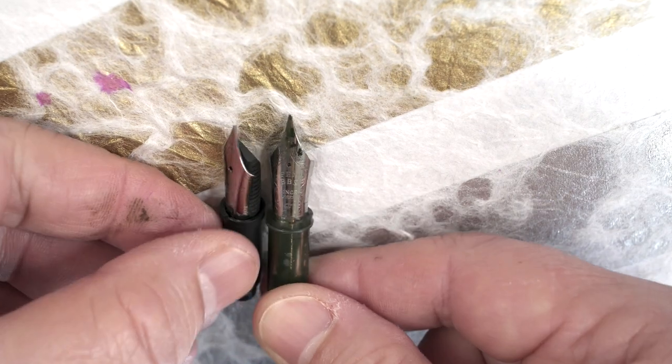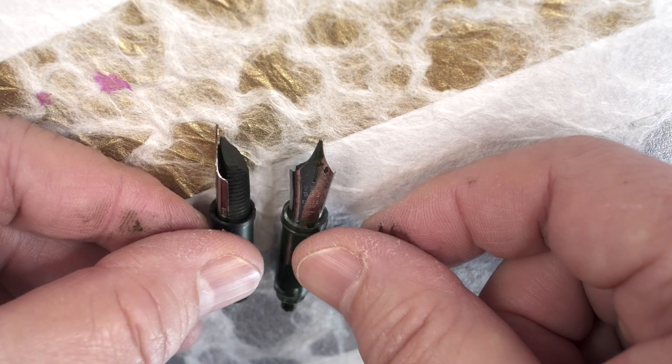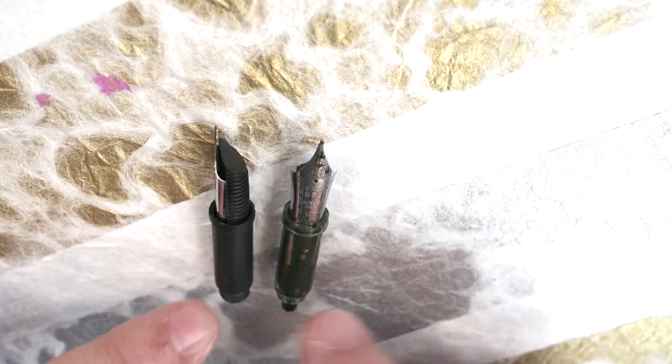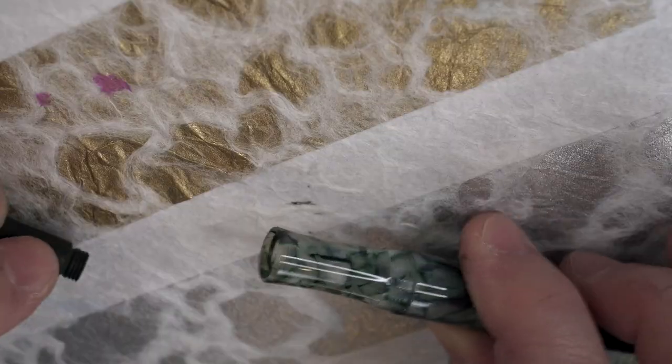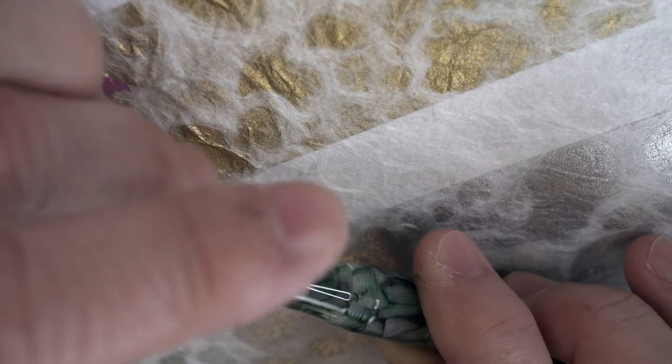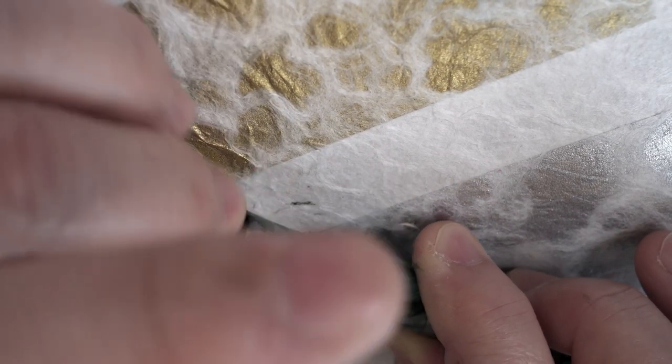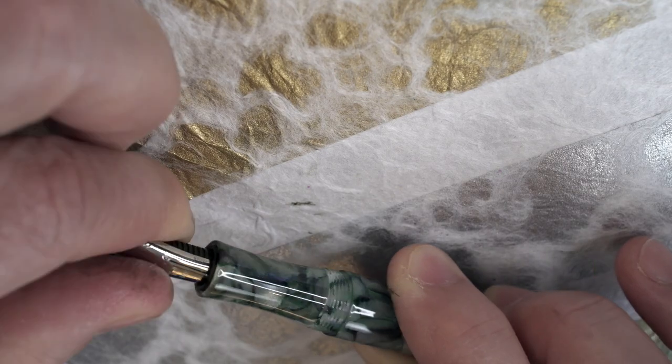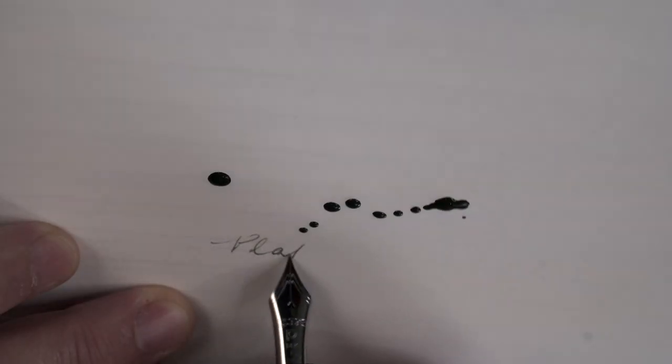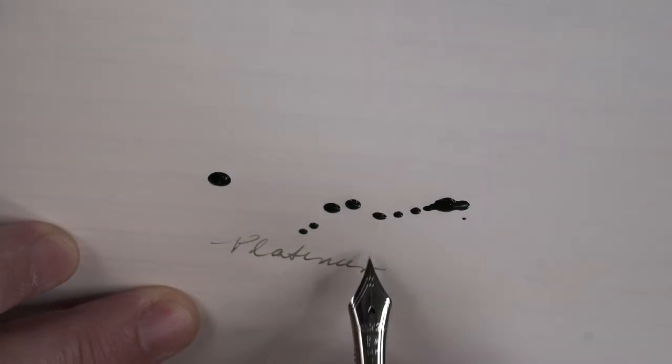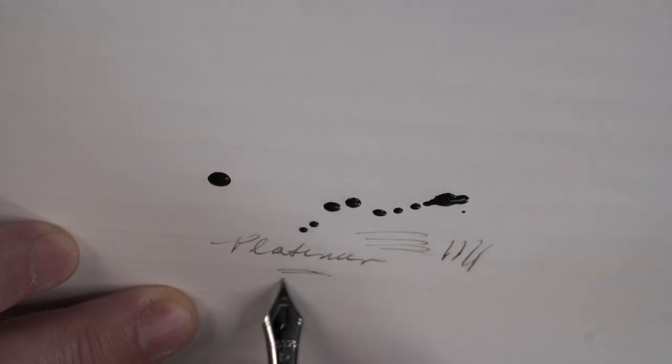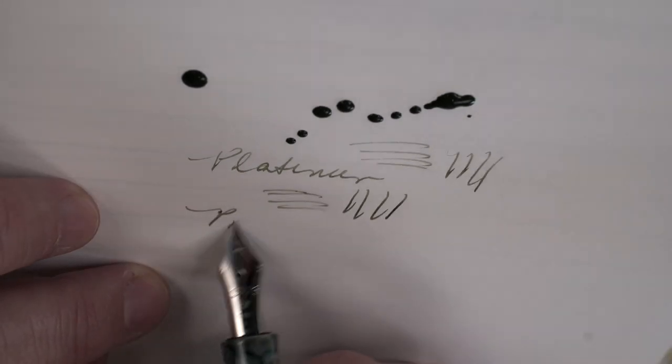The problem with, like, say a number six Jowo nib is that it's a little bit too long, and I had one stuck in there for a little while and I pried it back out. And then I'll screw the FNF nib unit back into the pen. And it works great. Compared to the Pen BBS fine nib, it is a lot finer and has a little more feedback.